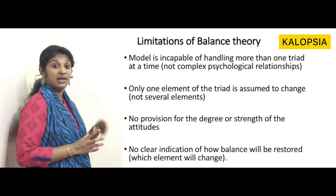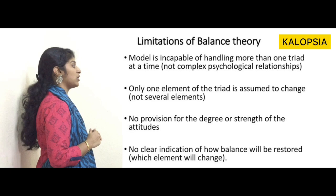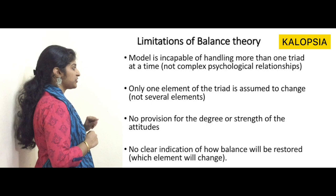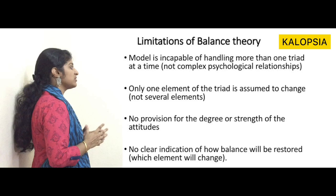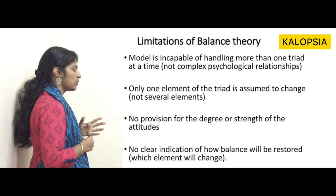The limitations of balance theory include: the model is incapable of handling more than one triad at a time; only one element of the triad is assumed to change, not several; there is no provision for the degree or strength of the attitude; and there is no clear indication of how balance will be restored, i.e., which element will change.